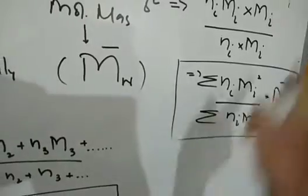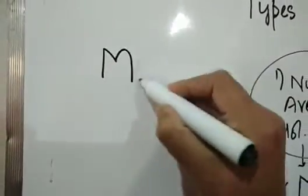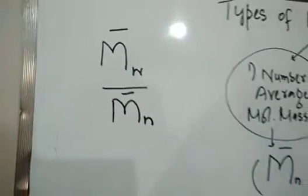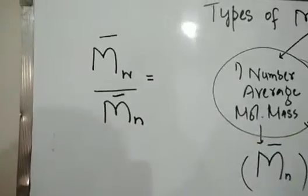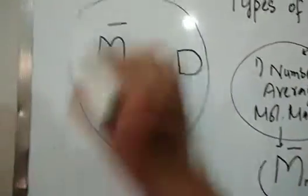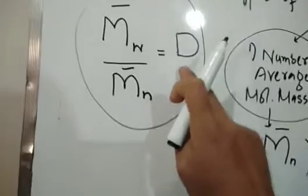So M̄w = Σ(Ni·Mi²) / Σ(Ni·Mi) is your weight average molecular weight. Now, if we take the ratio of weight average molecular mass divided by number average molecular mass, this ratio is denoted by D (or PDI). This is called the Polydispersity Index — the ratio of weight average molecular weight to number average molecular weight.